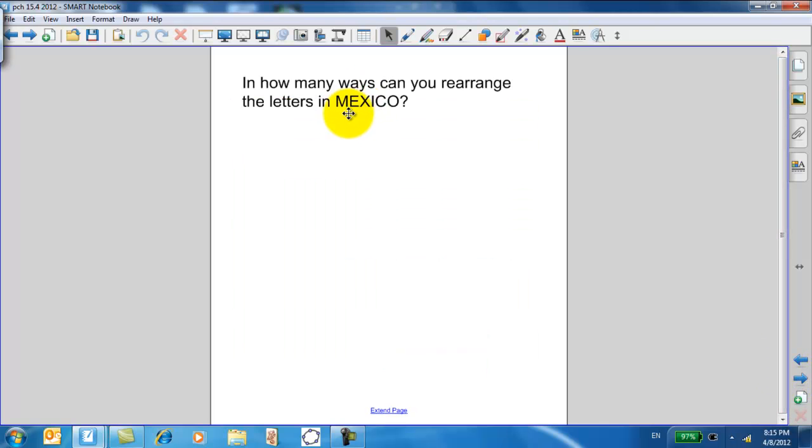In how many ways can you rearrange the letters in Mexico? Well, there's seven distinct letters, so that's just seven factorial. Seven times six times five times four times three times two times one. Or, I'm sorry, there's only six letters in Mexico. Six factorial, six times five times four times three times two times one, or 720. And you could have also used your calculator.